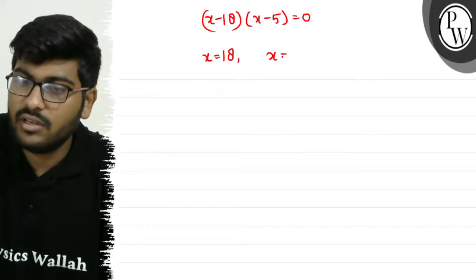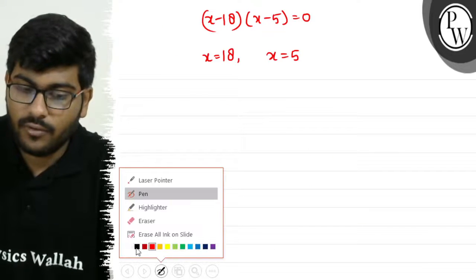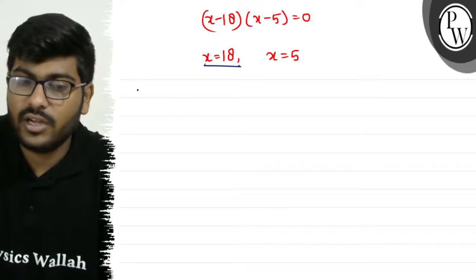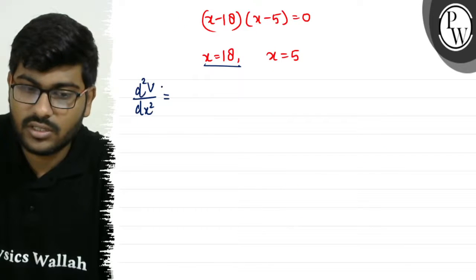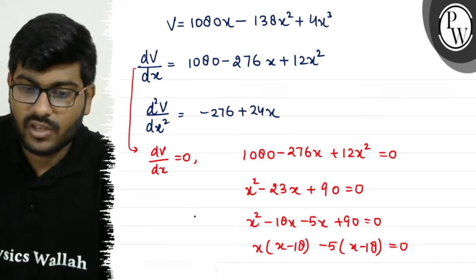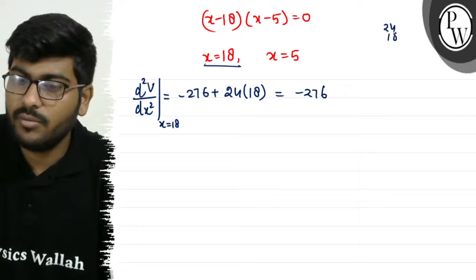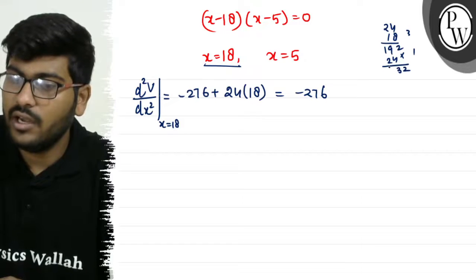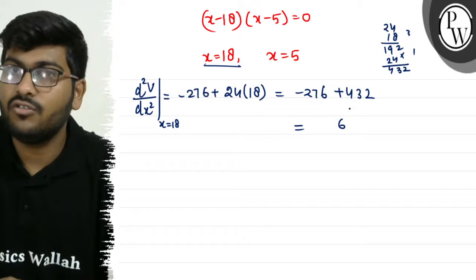Now we check which gives maximum. At x equals 18, d²V/dx² equals minus 276 plus 24 into 18, which equals minus 276 plus 432, which equals 156, which is positive. This means volume is minimum at x equals 18.